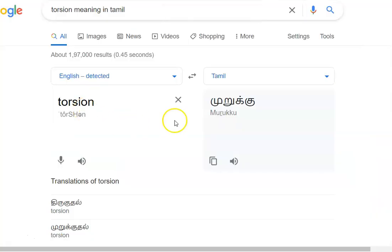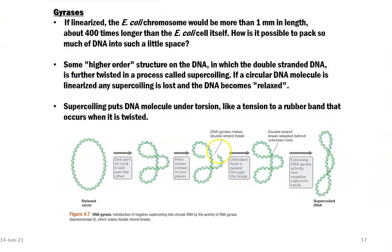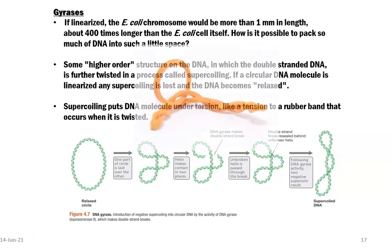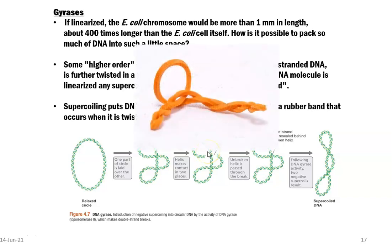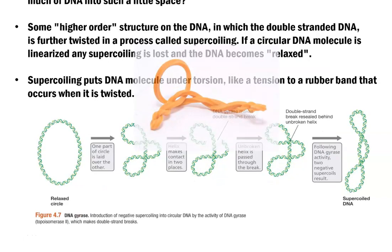The torsion — meaning in Tamil, murkudal, thirukudal — means the DNA is twisted in such a manner and kept inside the cell. It is something analogous to a tensioned rubber band.